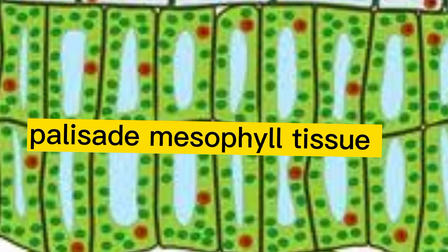Many cells working together form tissues. The cells involved are specialized to cooperate with each other to accomplish one common goal. There are many different types of tissues in both plants and animals. Palisade mesophyll cells combine together to form tissues known as palisade mesophyll tissue.